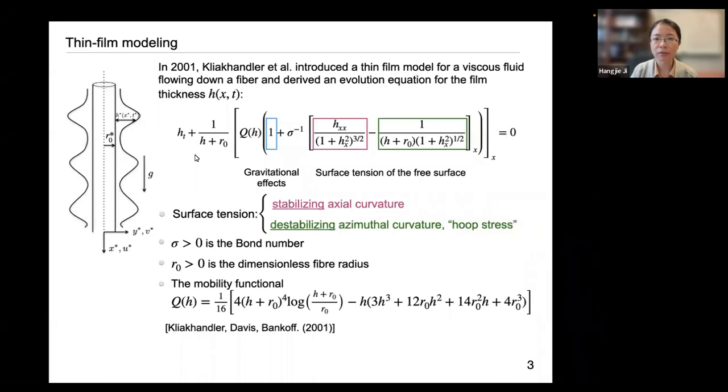The evolution equation we obtain for such thin film modeling looks like the following. This is a fourth-order parabolic type PDE for the film thickness H that accounts for the gravitational effect, and these two terms account for the surface tension of the free surface. In particular, the surface tension in this model plays two roles. Here we get the stabilizing axial curvature of the free surface, and we also get the destabilizing azimuthal curvature or hoop stress that is responsible for the droplet formation. Sigma over here accounts for the Bond number, and we have this mobility functional Q over here that incorporates the geometry of the cylindrical substrate.